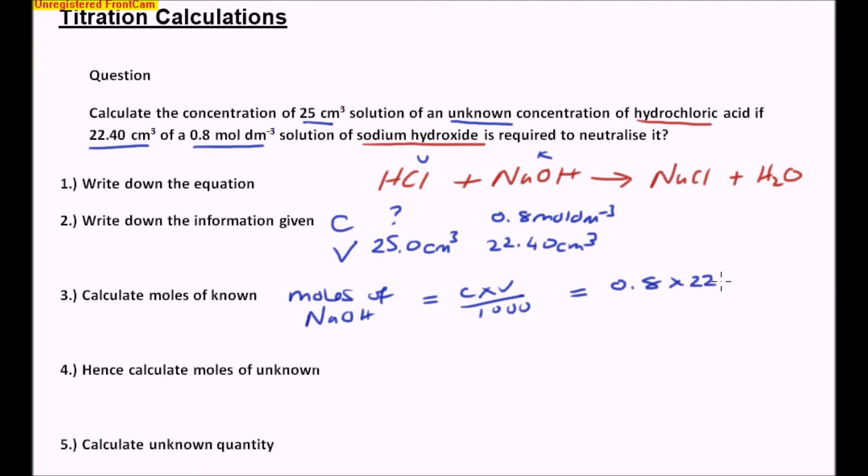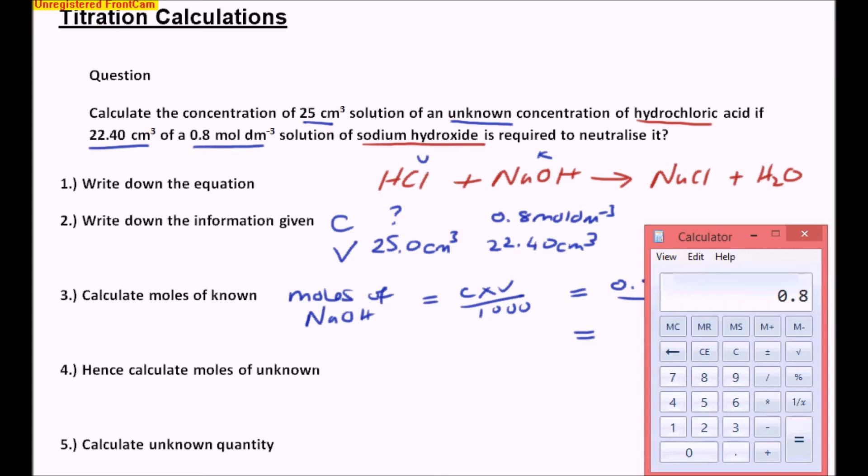which is going to be 0.8 times by 22.40 divided by 1,000. Remember, I'm dividing by 1,000 because I have to convert into decimeter cubed.